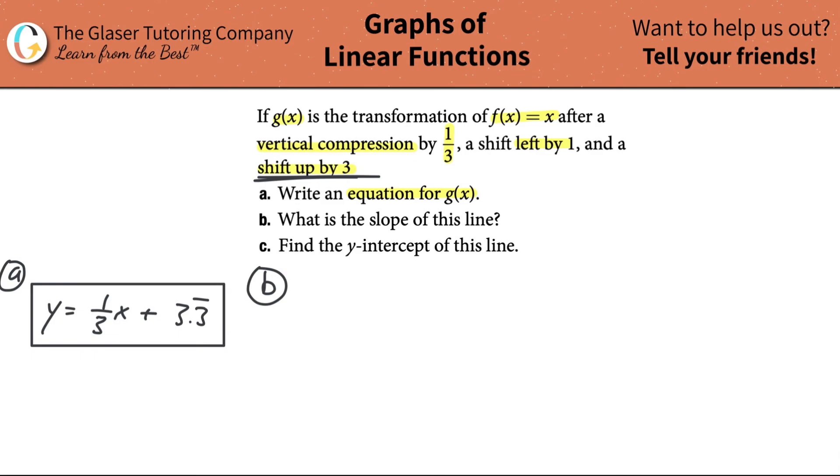So letter B says, what is the slope of this line? Well, we already figured that out, right? One-third. So that's easy. And what's the y-intercept? Oh my goodness. Positive 3.3 repeating. And that's it. All done.